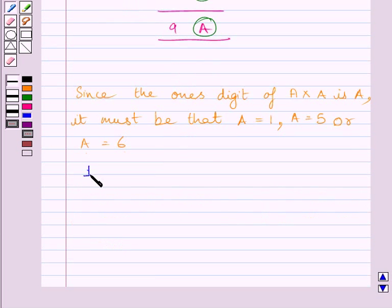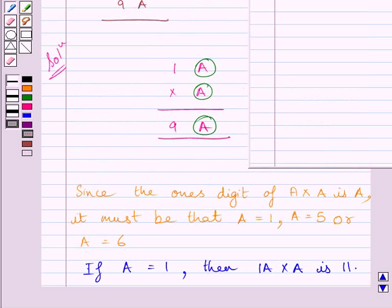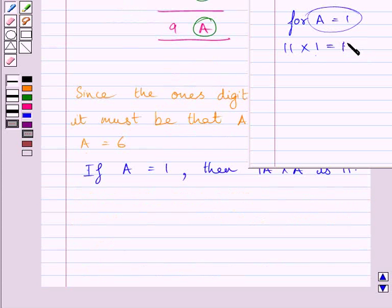If A equals 1, then product 1A multiplied by A is 11. For A equal to 1, product of 1A and A is 11 multiplied by 1, which equals 11. Now, 11 is less than the product 9A, so A cannot be equal to 1.